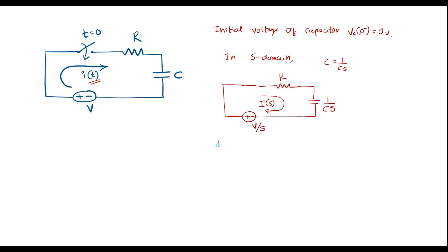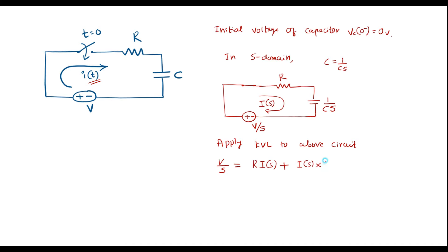Apply KVL to this circuit. So I can write: V by S is equal to voltage across R, which is R into I of S, plus 1 over Cs. Or I can write V by S is equal to I of S common, which will be R plus 1 over Cs.